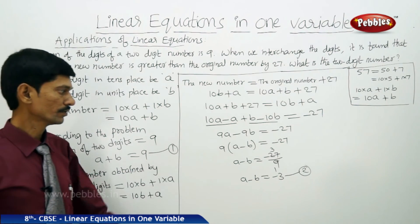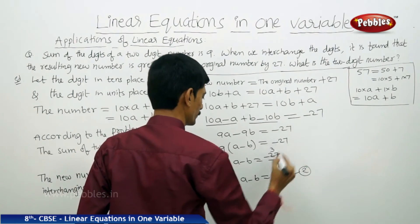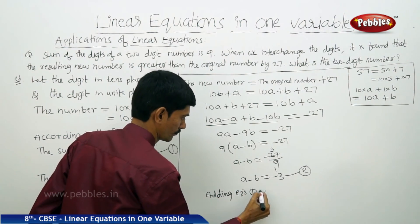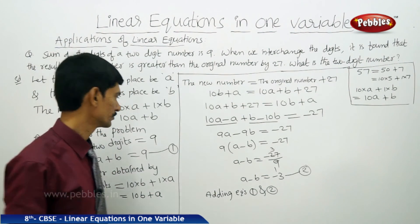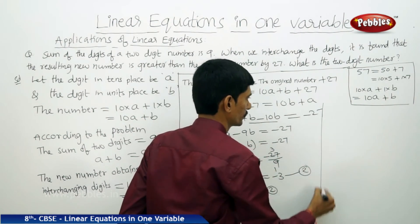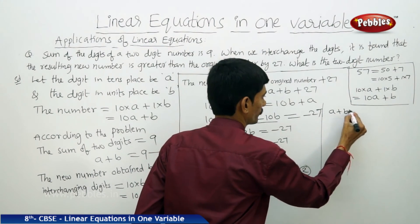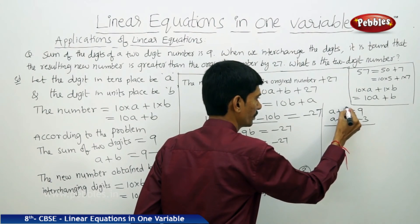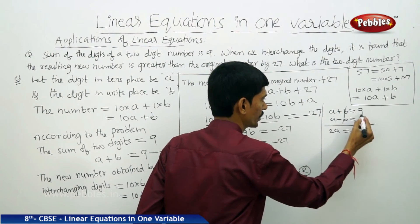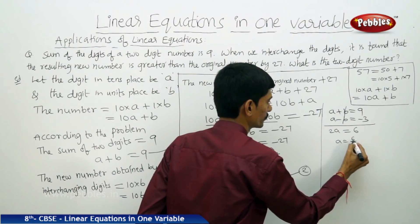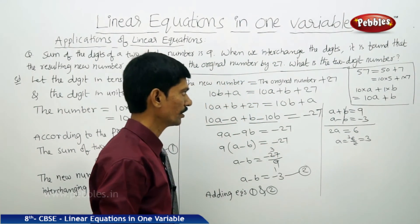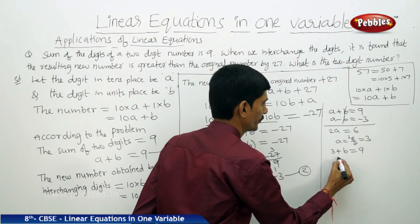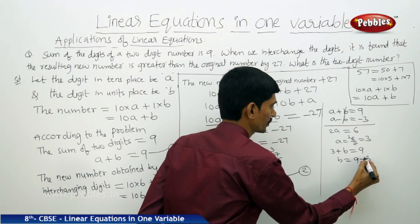Adding equations 1 and 2: a plus b equals 9, and a minus b equals minus 3. Adding cancels the b terms: 2a equals 6, so a equals 3. Substituting a equals 3 into equation 1: 3 plus b equals 9, so b equals 6.